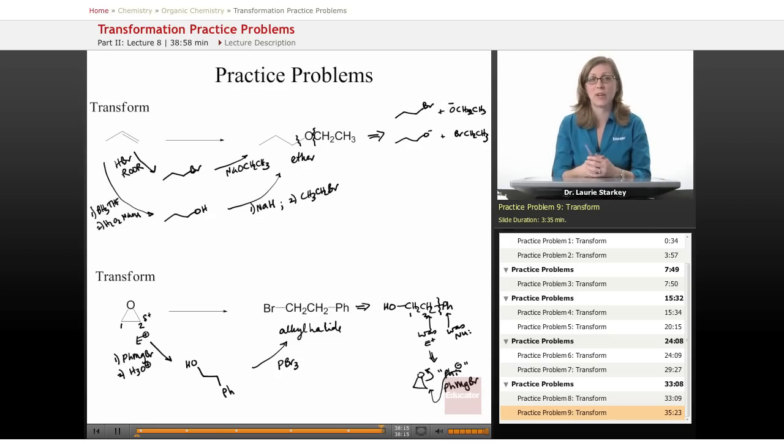So in each case for our transformations, sometimes you see it right away and you can move forward and do your transformation, your multi-step synthesis with no problem. But by and large, the best approach you're going to have is going to be looking carefully at your product, identifying the functional groups in that product, and recalling what reactions you've seen that will give that functional group as a final result.